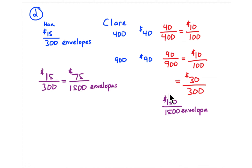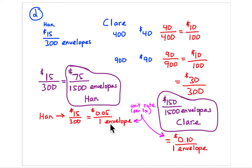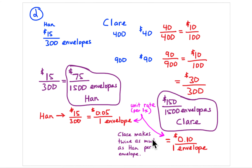The unit rate is how much money each person makes per envelope. $15 ÷ 300 = five cents per envelope for Han, and $150 ÷ 1,500 = ten cents per envelope for Claire. So Han gets a nickel for every envelope he stuffs, and Claire gets a dime — Claire makes twice as much per envelope as Han.